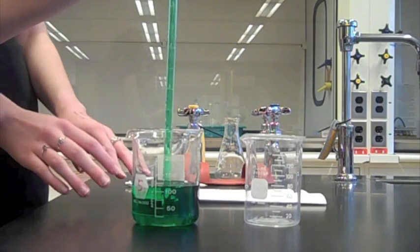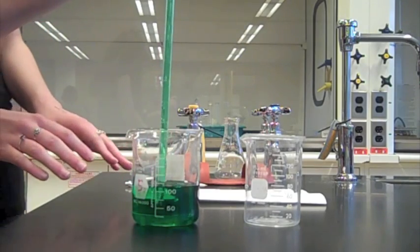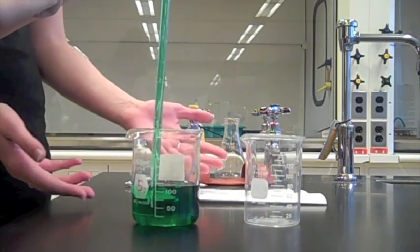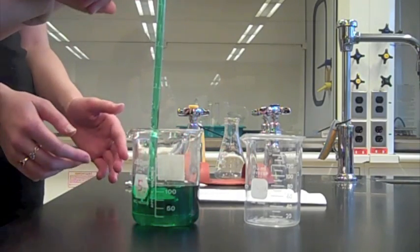So once you get it up past the line, you put your finger on top to stop the solution from going down farther. But how do you know where to stop? You measure from the top of the meniscus.